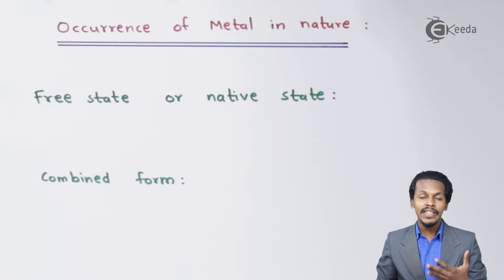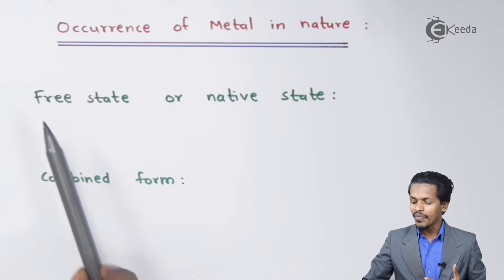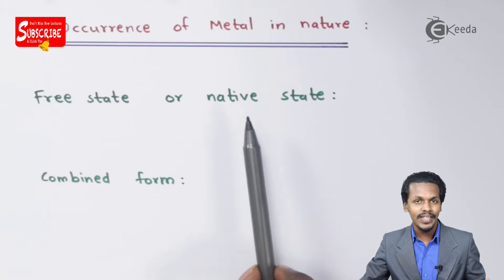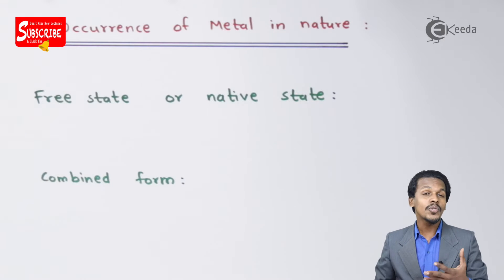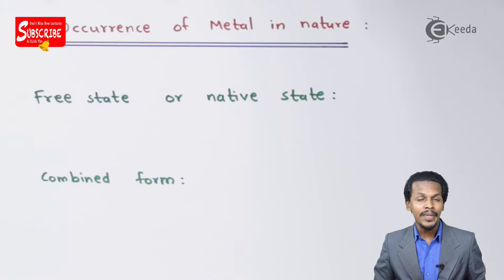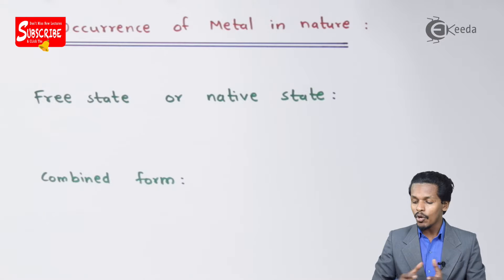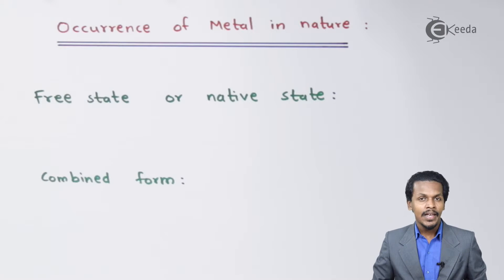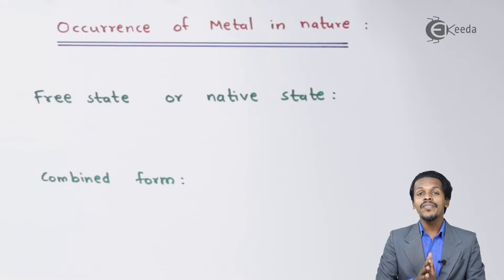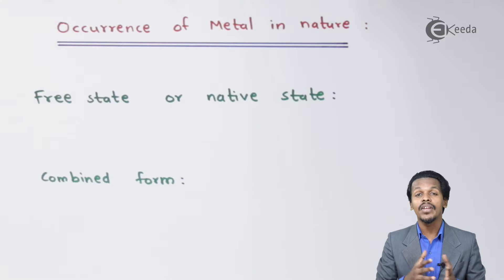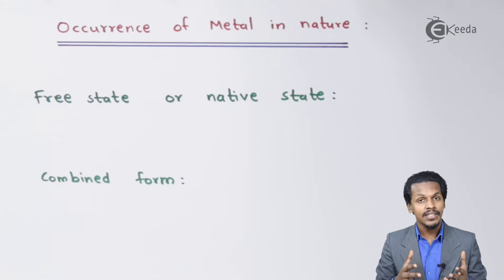Metals exist in nature in two forms: the free state, also called the native state, or in the combined form. In the free state, for example, we have gold, platinum, and mercury.